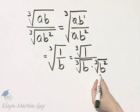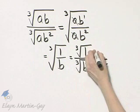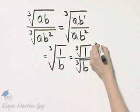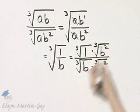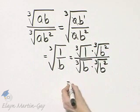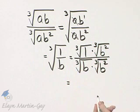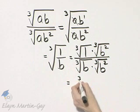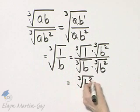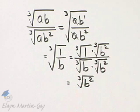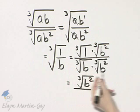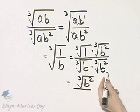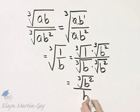If I multiply the denominator by the cube root of B squared, I'll multiply the numerator by the exact same thing, cube root of B squared. This is cube root of 1 times cube root of B squared, which is simply the cube root of B squared — since 1 times cube root of B squared is cube root of B squared. And our denominator is the cube root of B cubed, and the cube root of B cubed is simply B.